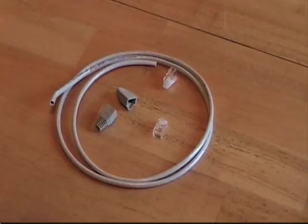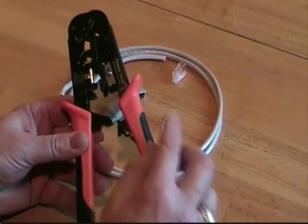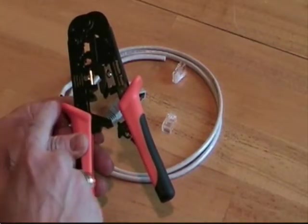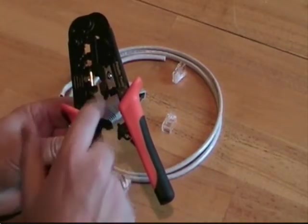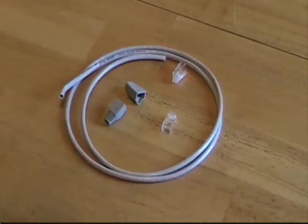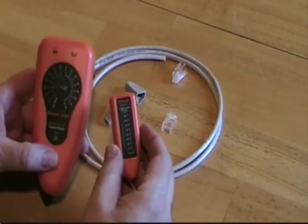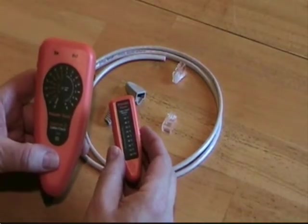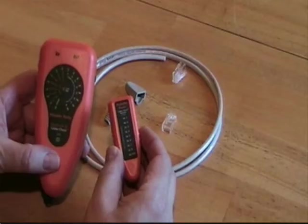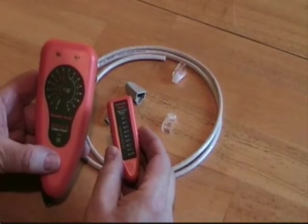We start with a length of Category 6 cable, some crimp-on RJ45 connectors, and some cable boots for appearance. An all-in-one tool that crimps, cuts, and strips insulation is a must. You will also need a LAN tester to test your cable when it is complete.